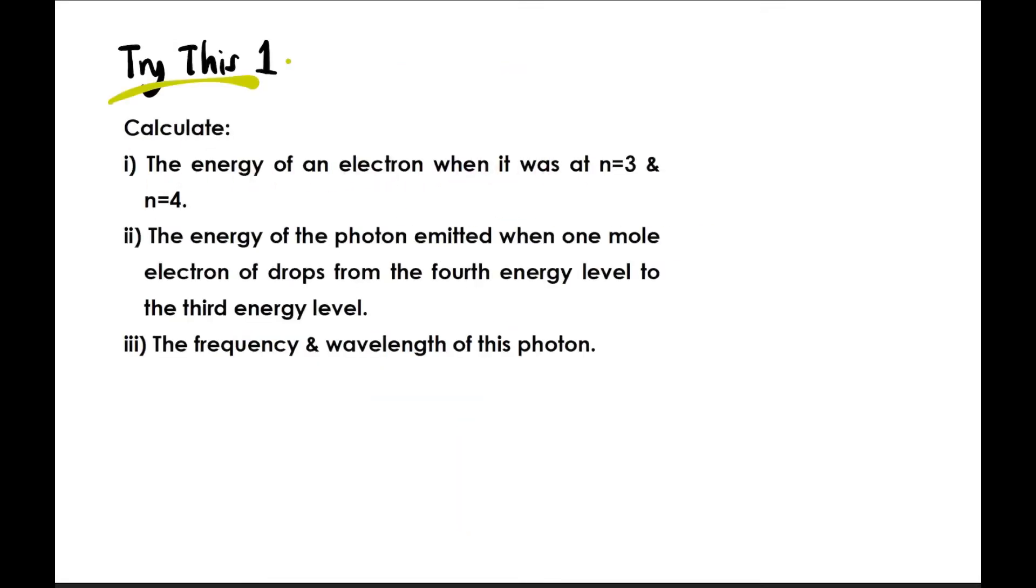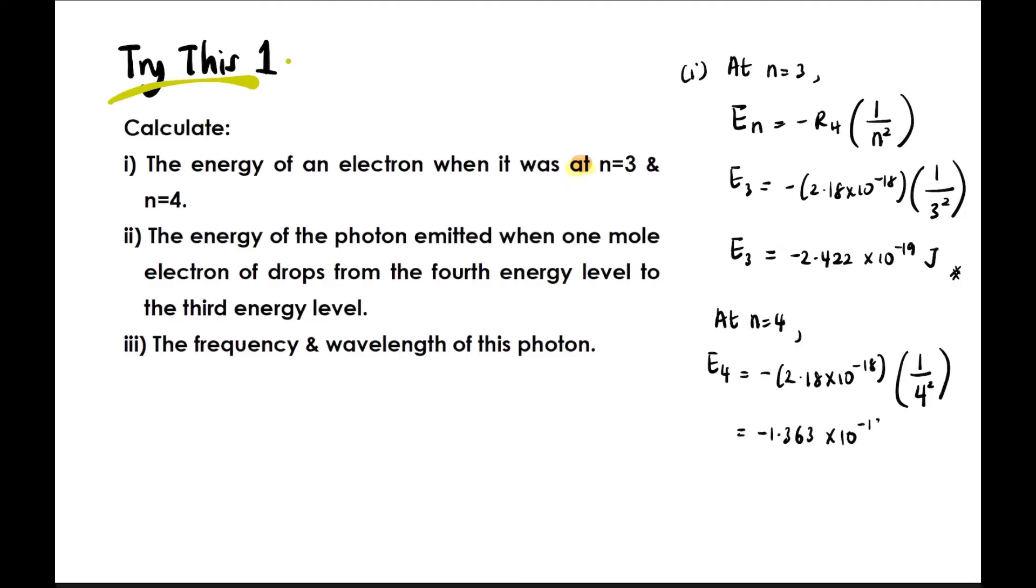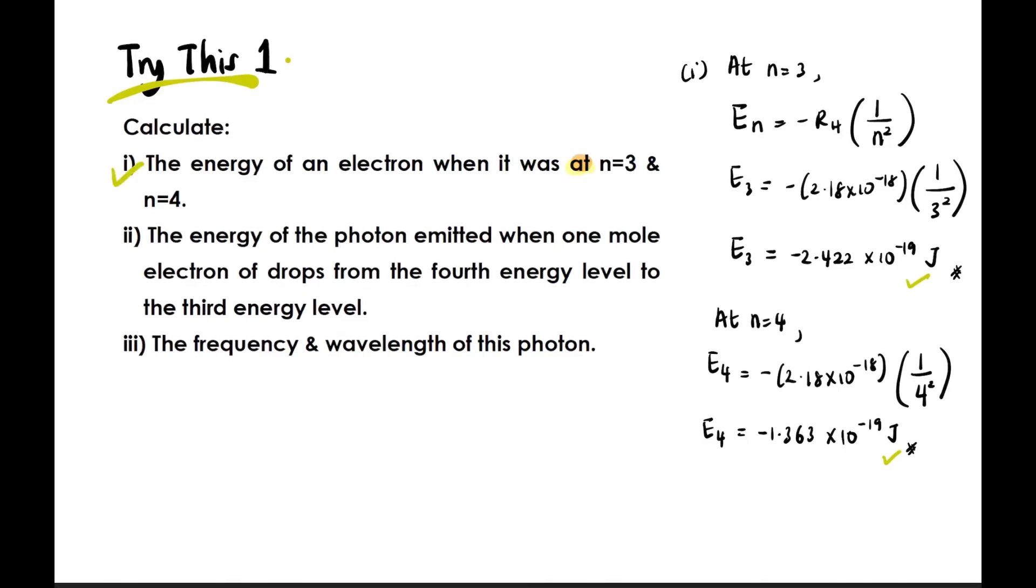Now let's try this question: Calculate the energy of an electron when it was at n equals 3 and n equals 4. This means we want the energy at that n, so for n equals 3, the energy is En, not delta E. En equals negative RH one over n squared. So E3 means negative RH times one over 3 squared. Let the calculator do the job - you should get negative 2.422 times 10^-19 joules. For n equals 4, substitute the value of n and you should get negative 1.363 times 10^-19 joules. This is the energy at that n.